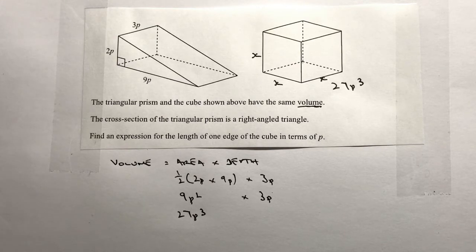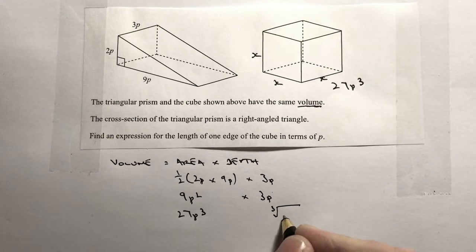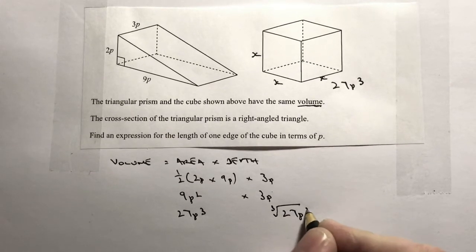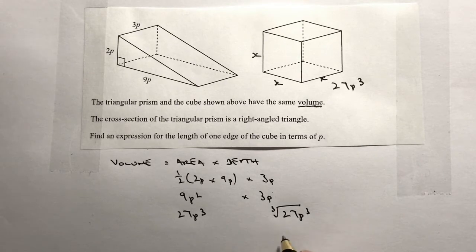So for us to find out the length of each of the edges of this cube, we just basically want the cube root of 27p cubed. That will give us each of the edges of the cube. The cube root of 27 is 3, and the cube root of p cubed is going to be p.